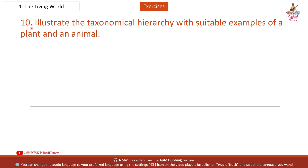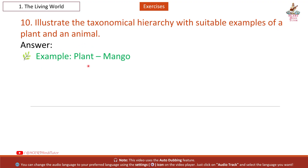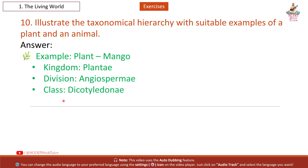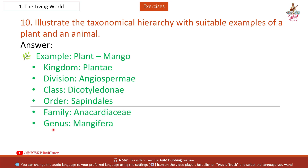Question 10: Illustrate the taxonomical hierarchy with suitable examples of a plant and an animal. Answer — Plant example: Mango. Kingdom: Plantae; Division: Angiospermae; Class: Dicotyledonae; Order: Sapindales; Family: Anacardiaceae; Genus: Mangifera; Species: Mangifera indica.